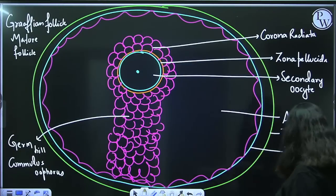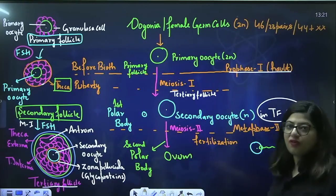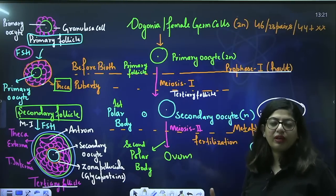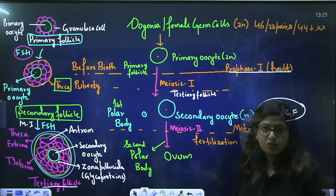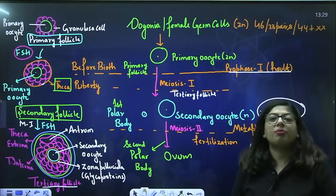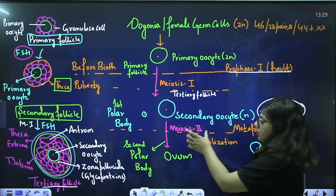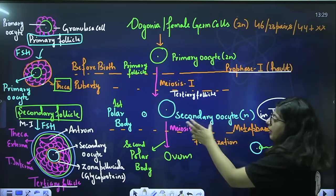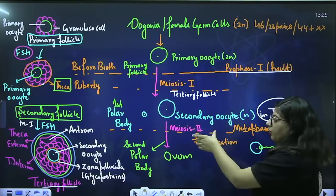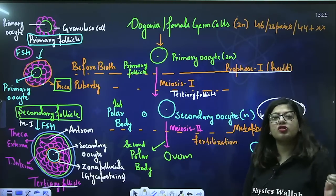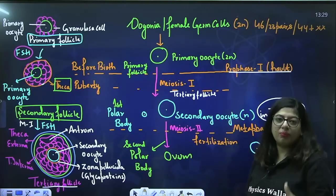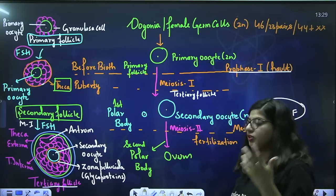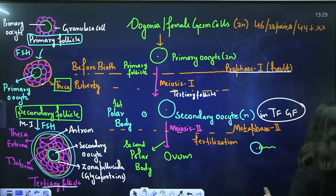After the Graafian follicle is formed, we need to complete meiosis II. When the secondary oocyte got halted at meiosis II, meiosis II can only be completed when fertilization occurs. So after the Graafian follicle is formed, let me explain with a different view.